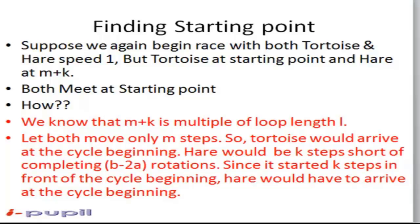Let both move only m steps. So tortoise would arrive at the cycle beginning. Hare would be k steps short of completing (b minus 2a) rotations. Since it started k steps in front of the cycle beginning, hare would have to arrive at the cycle beginning. Hence by using this arrangement we can find out the starting point of the loop.